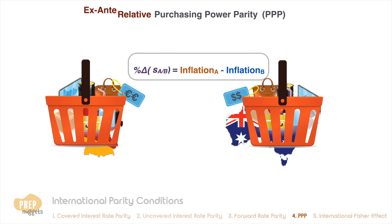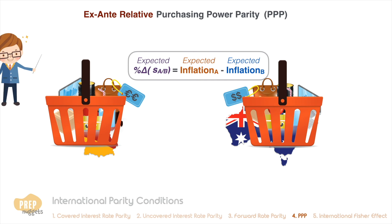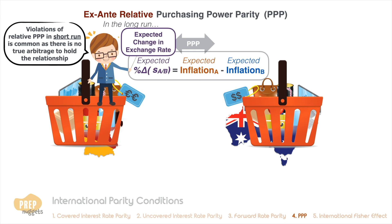The ex-ante version of PPP is the same as relative PPP except that it is forward-looking. It asserts that the expected percentage change in exchange rate is the difference in expected inflation rates between the two countries. Because there's no true arbitrage available to force relative PPP to hold, violations in the short run are common. However, relative PPP holds approximately in the long run, making it a useful method for estimating the relationship between exchange rates and inflation rates.